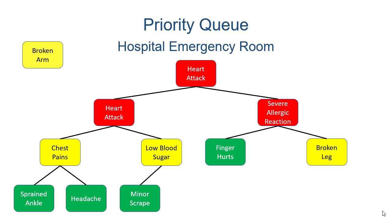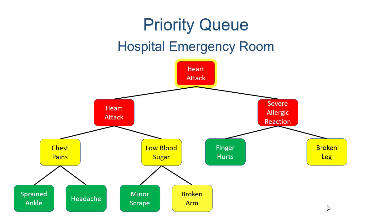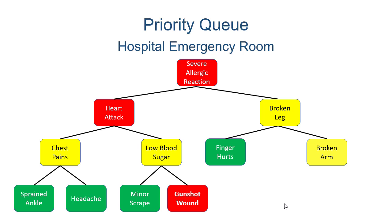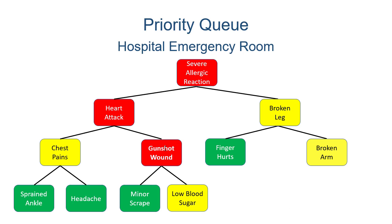So here with this priority queue, someone comes in with a broken arm. We add that new node, and this is a valid location for it — so this is what the heap looks like now. The doctor comes in and wants to treat somebody. They'll treat the person with a heart attack because that's at the top of the heap. Then once that heart attack patient is removed, the severe allergic reaction gets to go to the top of the heap. If in the meantime someone comes in with a gunshot wound — that's high priority — we add the gunshot wound and adjust the heap so it has a higher priority than the low and medium priority patients. However, they would still have a lower priority than the heart attack, since high priority items are sorted according to their arrival time.